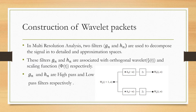As you can see in this figure, the input signal W is passed through a high-pass filter H and then decimated by a factor of 2, giving us the detail space of the input signal. In the same way, if we pass the signal into a low-pass filter and decimate by a factor of 2, we get the approximation space.